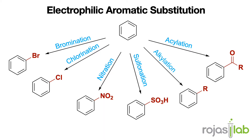At the core of electrophilic aromatic substitution is the aromatic benzene ring, known for its stability and unique reactivity. Electrophilic aromatic substitution is a substitution reaction in which an aromatic carbon-hydrogen bond is replaced by an electrophile and the aromatic ring is preserved. These reactions include halogenation, sulfonation, nitration, Friedel-Crafts alkylation, and Friedel-Crafts acylation.